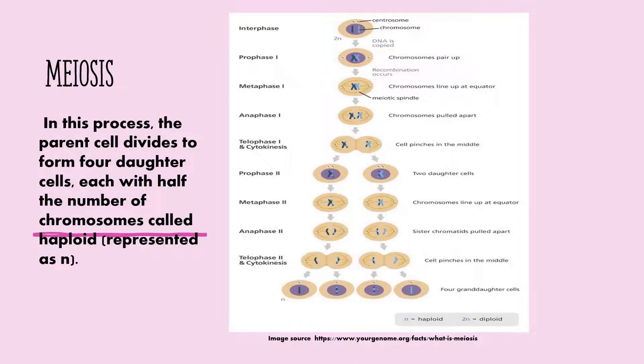Meiosis is where the parent cell divides to form four daughter cells, each with half the number of chromosomes called haploid represented as N. Meiosis involves two parts of cell divisions.